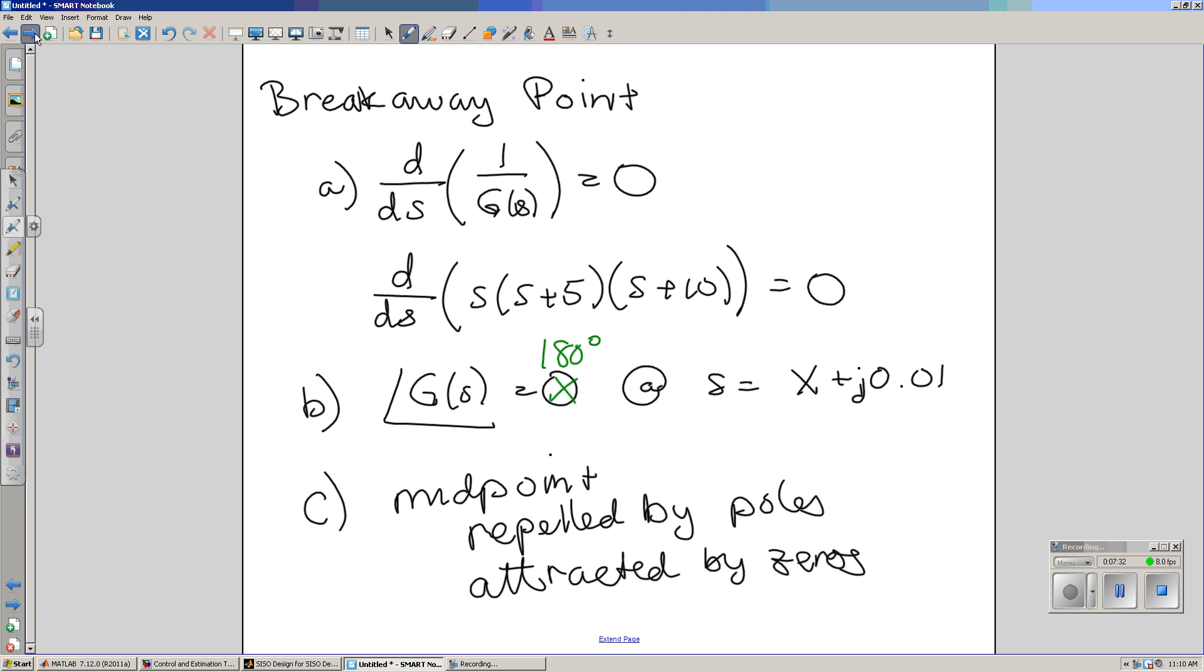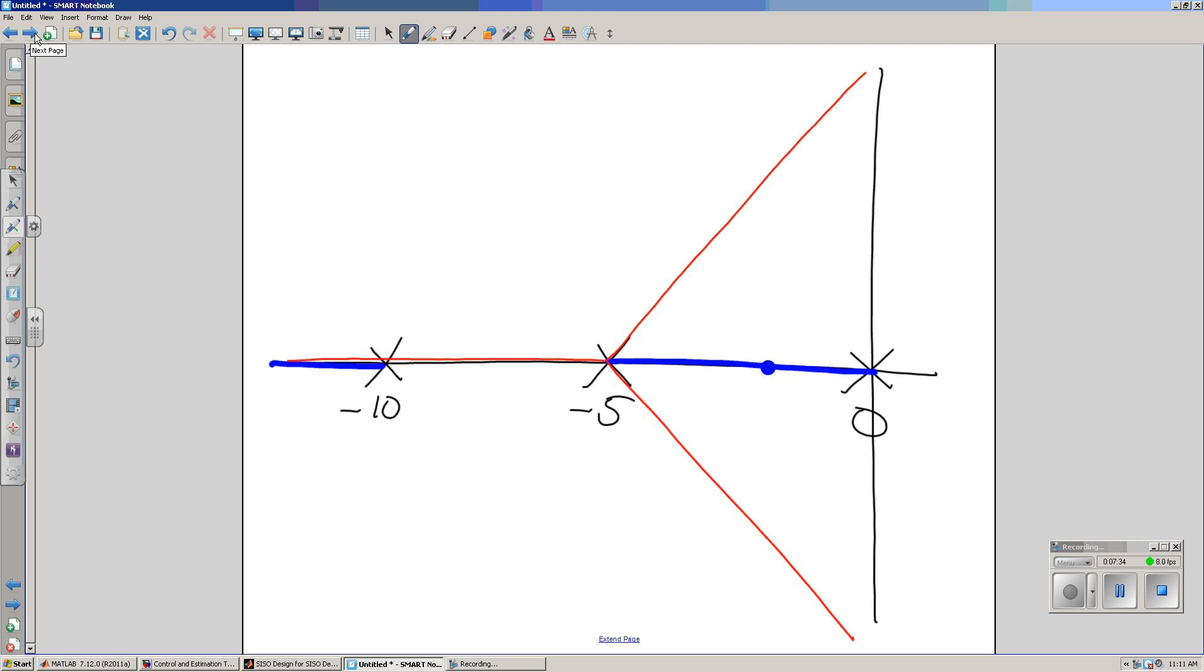it's the midpoint by symmetry between two poles that are repelled by poles and attracted by zeros. That gives you this. The midpoint between 0 and minus 5 is at 2.5. The pole at minus 10 repels. Gives you the breakaway point right around here, around minus 2.1. That tells you the root locus points can take off at minus 2.1 and go to the asymptote.